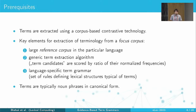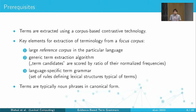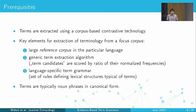Terms are extracted in Sketch Engine using corpus-based contrastive technology. You have a focus corpus you want to explore and a large reference corpus in the same language, so you can know which words are typical for your text rather than general language. There is a generic term extraction algorithm: you compare the relative frequency of the term in the focus corpus versus the reference corpus and give each term candidate a score. I say 'term candidate' because not all n-grams are terms — usually terms are noun phrases, but not just any combination of a noun with other words; it should be a full lexical structure.